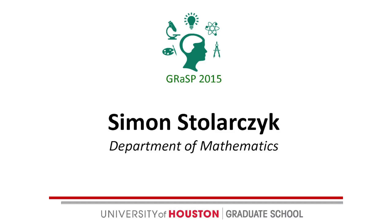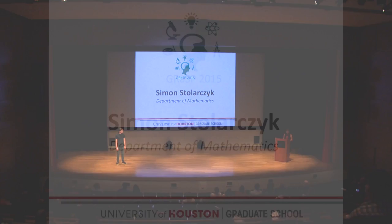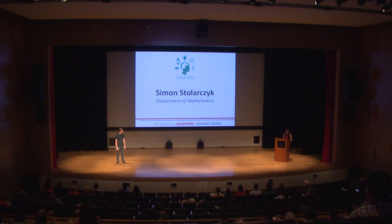Our next speaker is Simon Stolacek. He is a fourth year graduate student at the Department of Mathematics under the advisement of Dr. Krasimir Josik. When he isn't spending an irresponsible amount of time watching TV — those are his words not mine — Simon likes to think about what math can tell us about the ways groups interact. Today he will share with us how he goes about doing that. Allow me to introduce Simon.